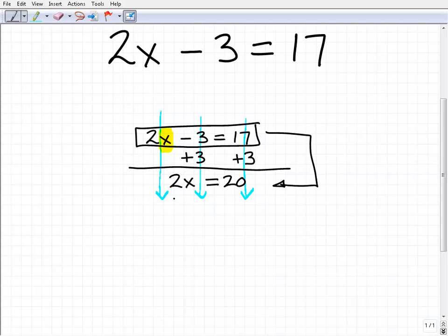If I gave you the choice to solve 2x minus 3 equals 17, or 2x equals 20, you'd probably choose 2x equals 20. Both equations are equivalent. When solving equations, you're essentially rewriting equations in easier and easier formats, but they're the same equation.